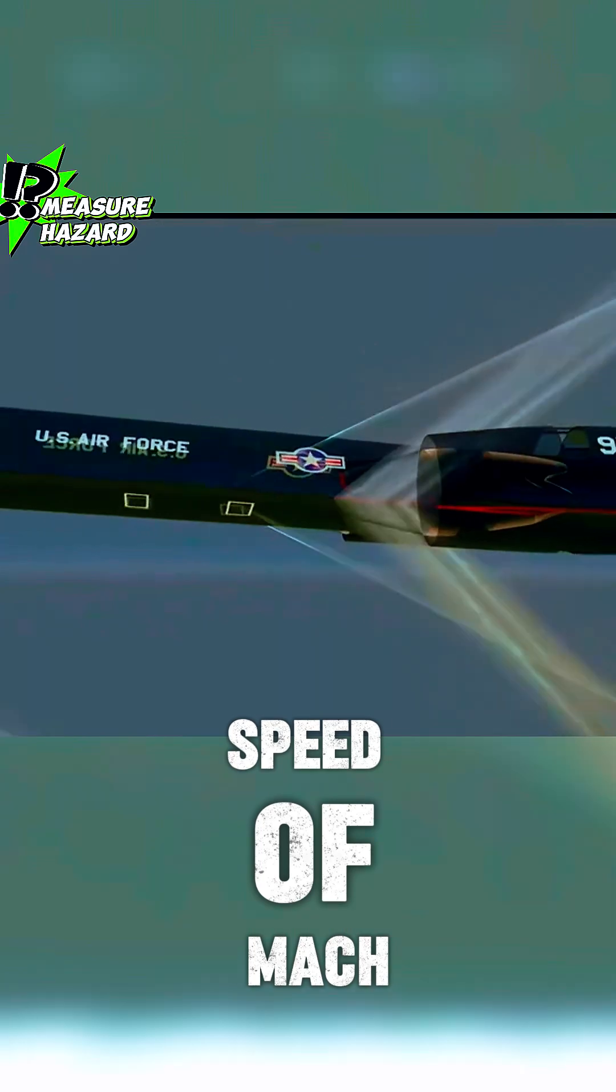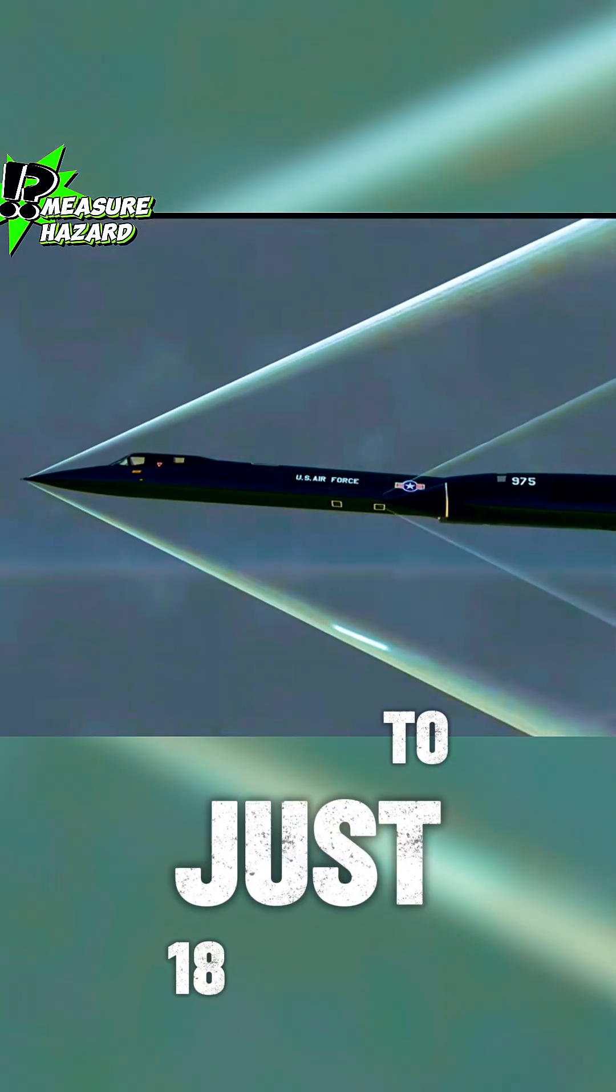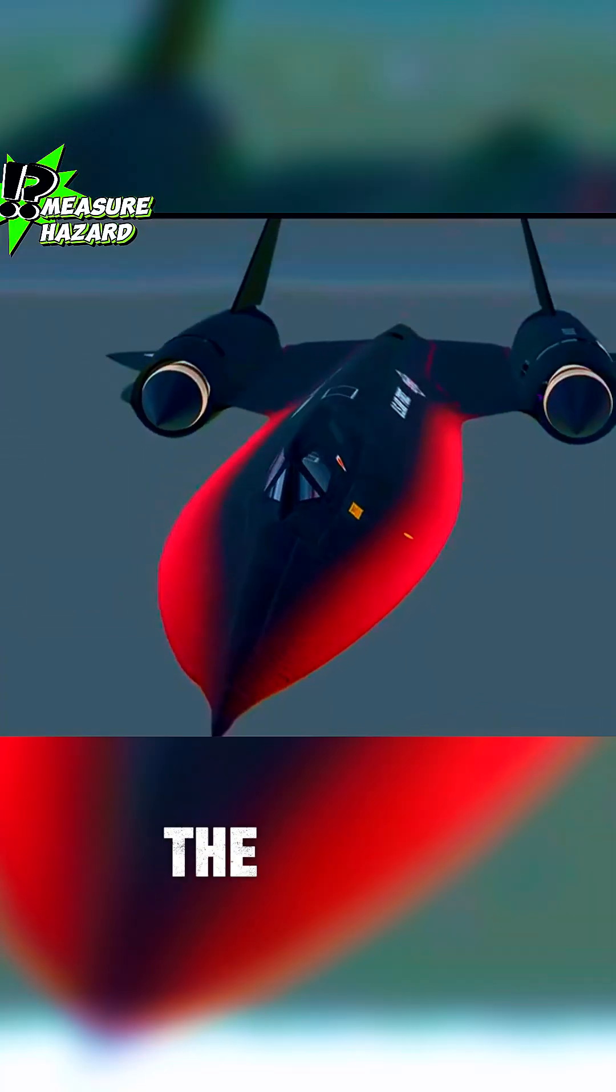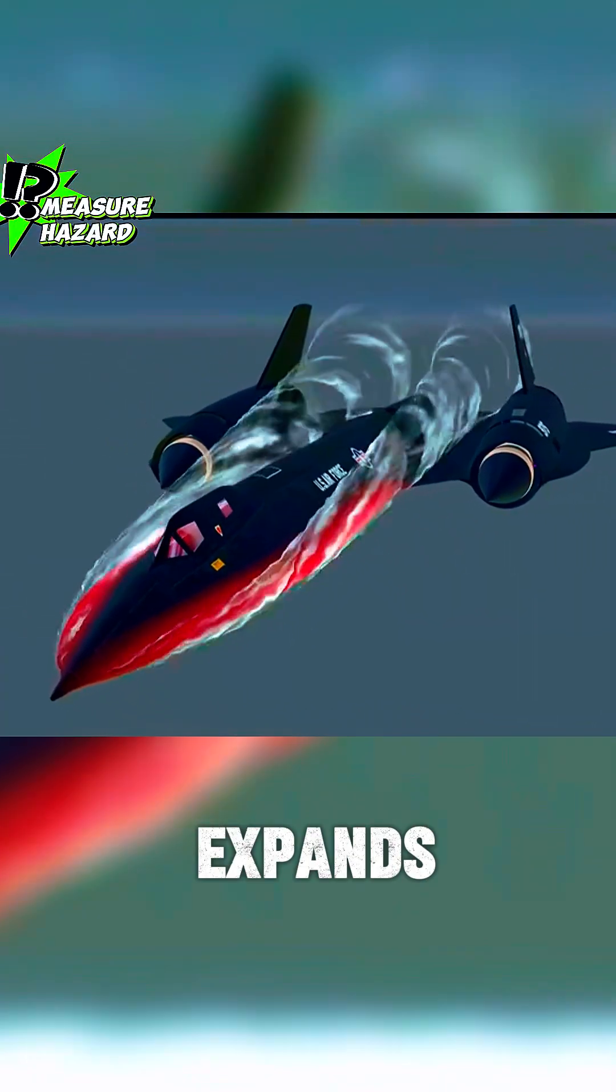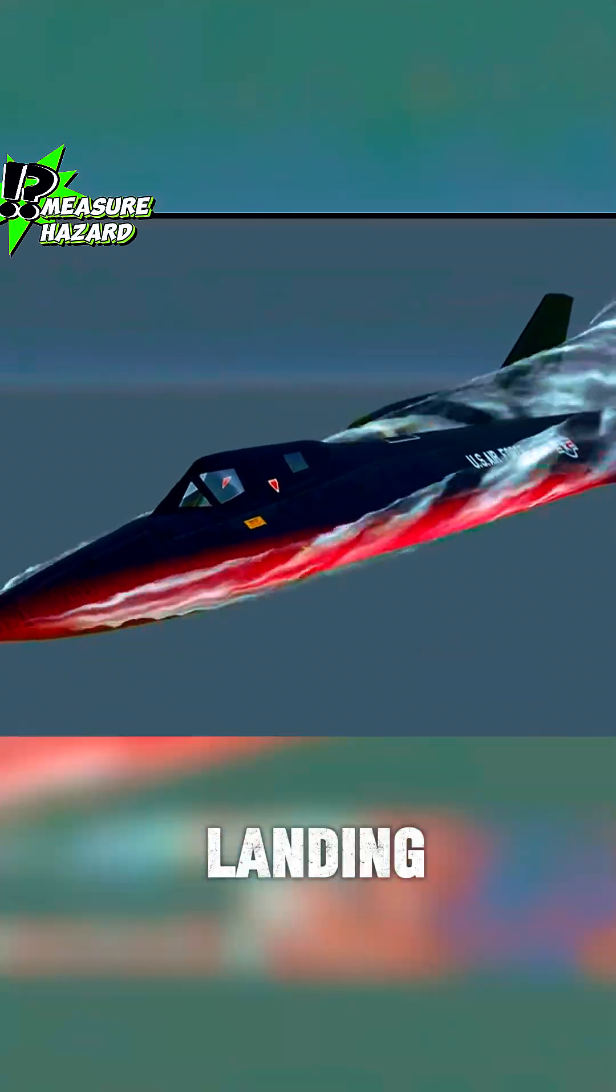At its maximum speed of Mach 3.2, the angle at the front can narrow to just 18 degrees. At this speed the entire aircraft's body heats up and expands, leading to fuel leakage after landing.